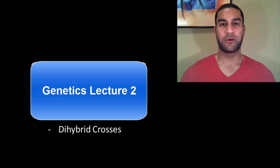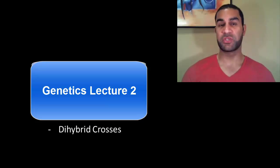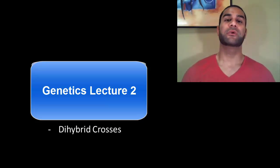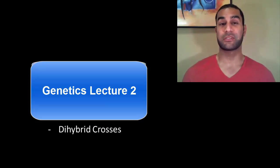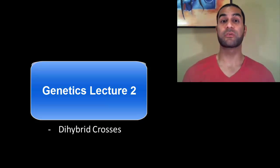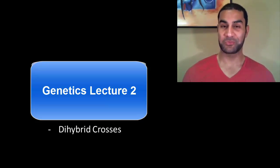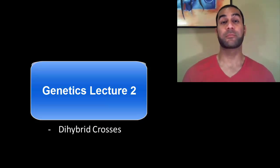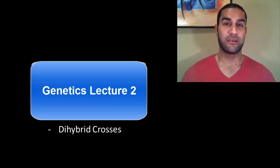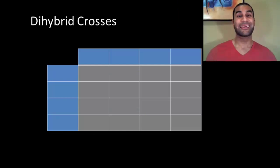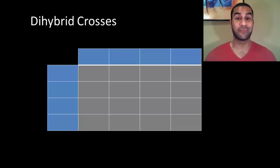Hey guys, this is Mr. Mahmood. I've already gone through the background of basic Mendelian genetics, and finally we're going to finish with something called dihybrid crosses, or basically crosses of multiple traits — doing more than one trait at a given time. It does make it much more complex, but we'll walk through a couple of different ways to get to that answer, so let's get started.